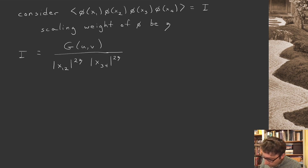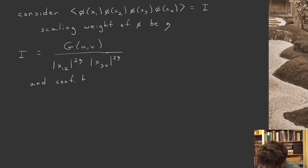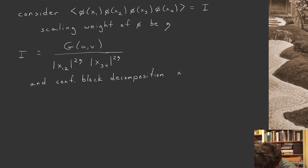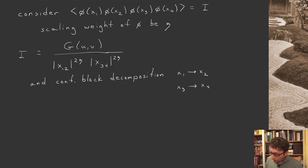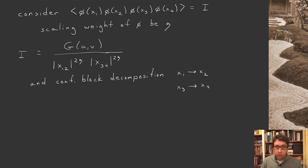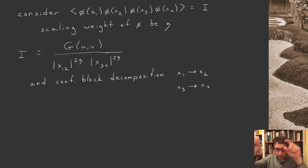Last week we performed a conformal block decomposition, decomposing the function g into a sum over conformal blocks — a sum over conformal primaries and their descendants. We took x1 close to x2 and x3 close to x4, replaced phi(x1) phi(x2) by its operator product expansion and phi(x3) phi(x4) by their OPE, then multiplied those two OPEs together. We found a sum over conformal primaries exchanged between the two pairs of operators.